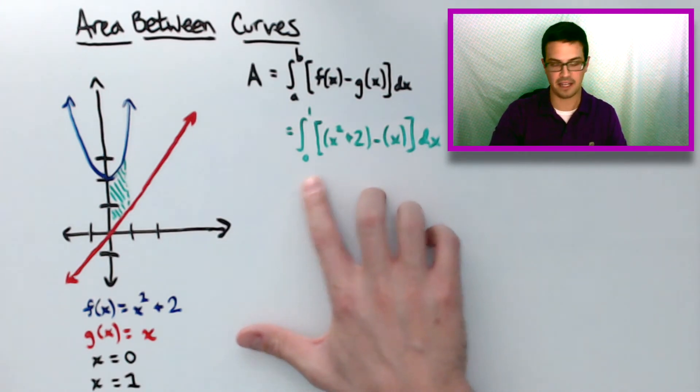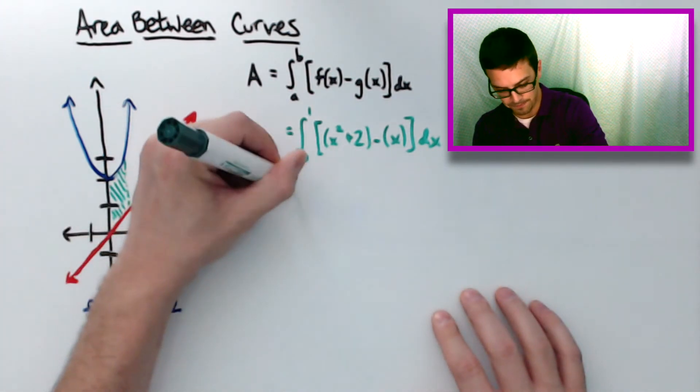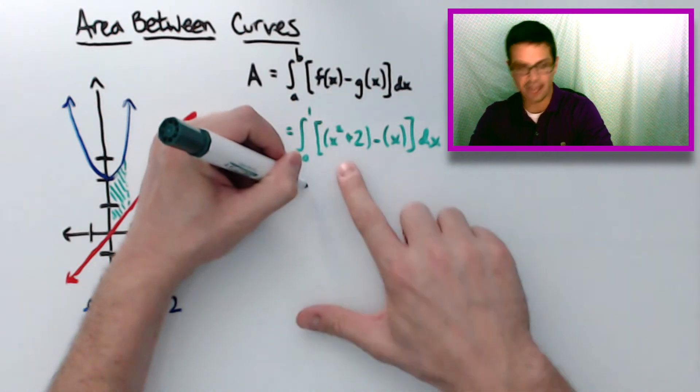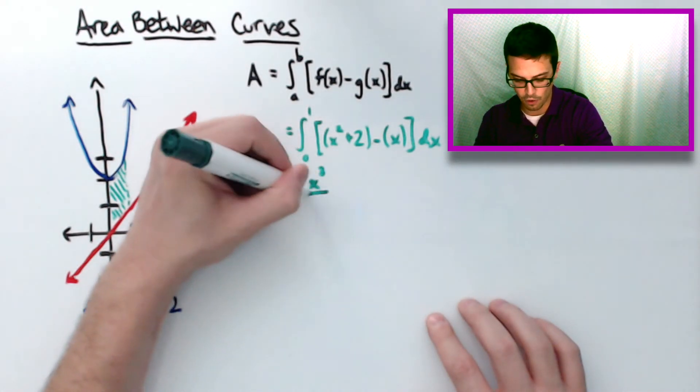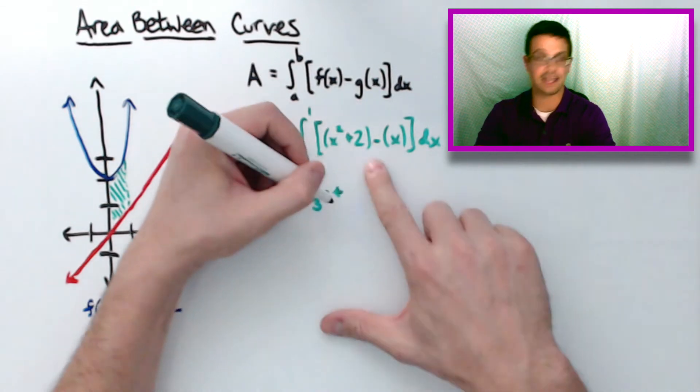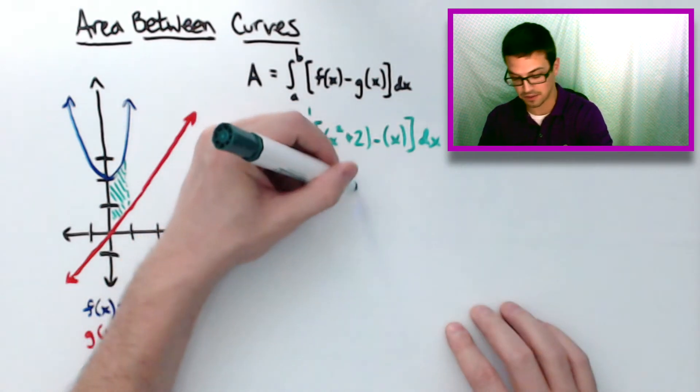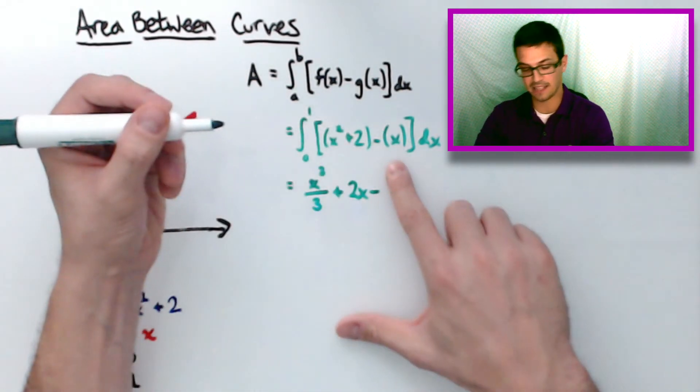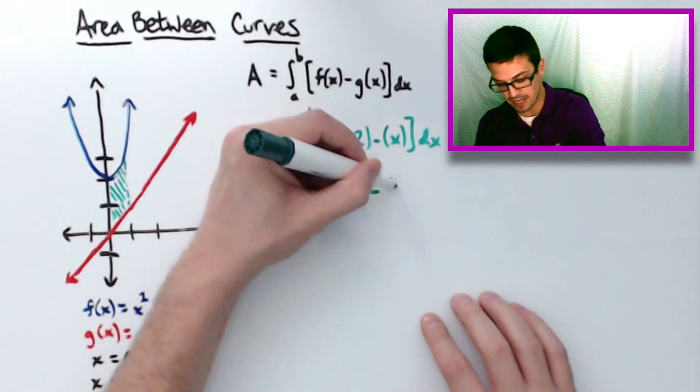Okay, the next step would be to take the antiderivative, just like normal. So the x squared will be x cubed over 3 plus the antiderivative of 2 is 2x, minus the antiderivative of x is going to be x squared over 2.